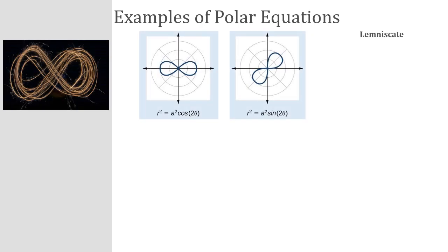Another example of a polar equation is something called a lemniscate. A lemniscate looks — you can see in this image — like a sound wave that almost looks like the infinity symbol. Graphing that with a polar equation, the equation is r squared equals a squared times either the sine or the cosine of the quantity two times theta, where a cannot equal zero.